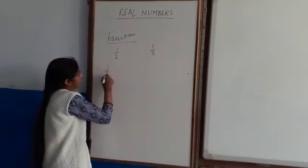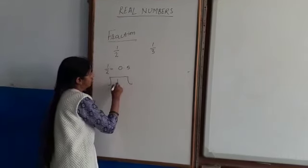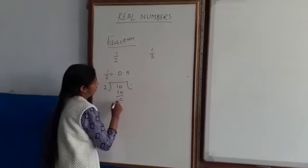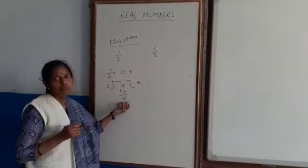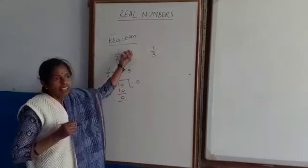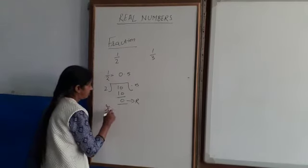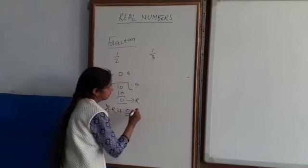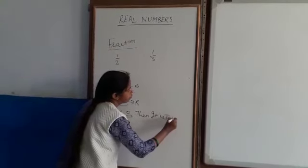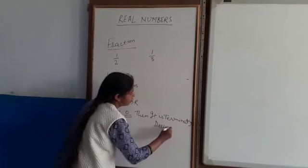If I change this fraction into decimal form, I get 1 by 2 is equal to 0.5. Because as I divide 1 by 2, I get the remainder 0. Remainder 0 means the fraction ends and the decimal is terminating. If R is 0, then it is terminating decimal form.